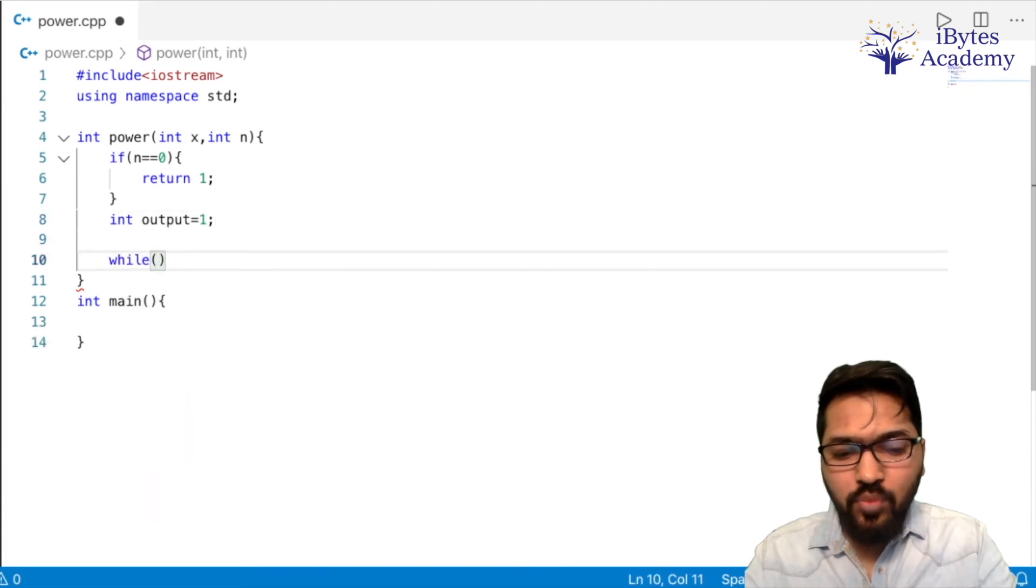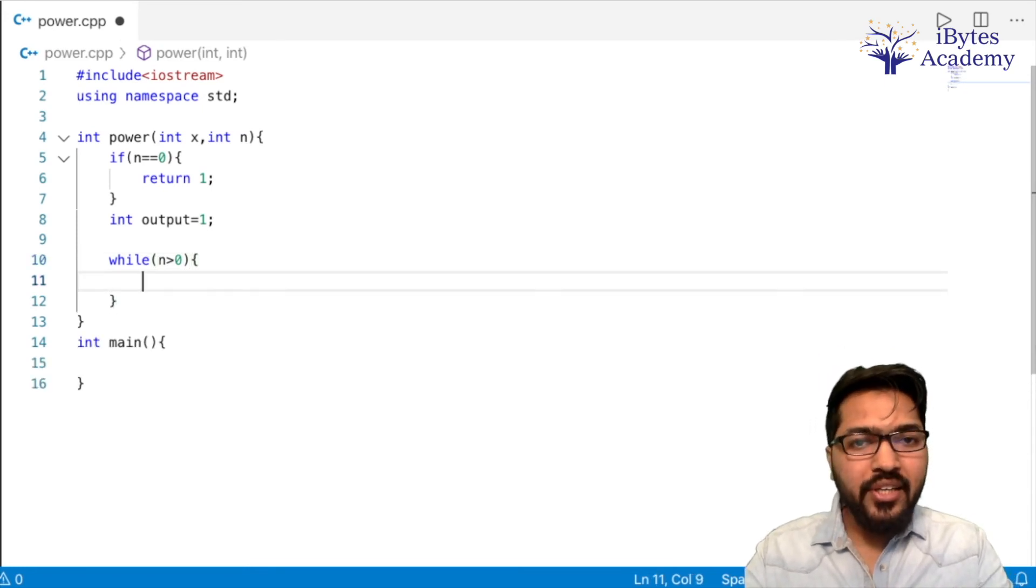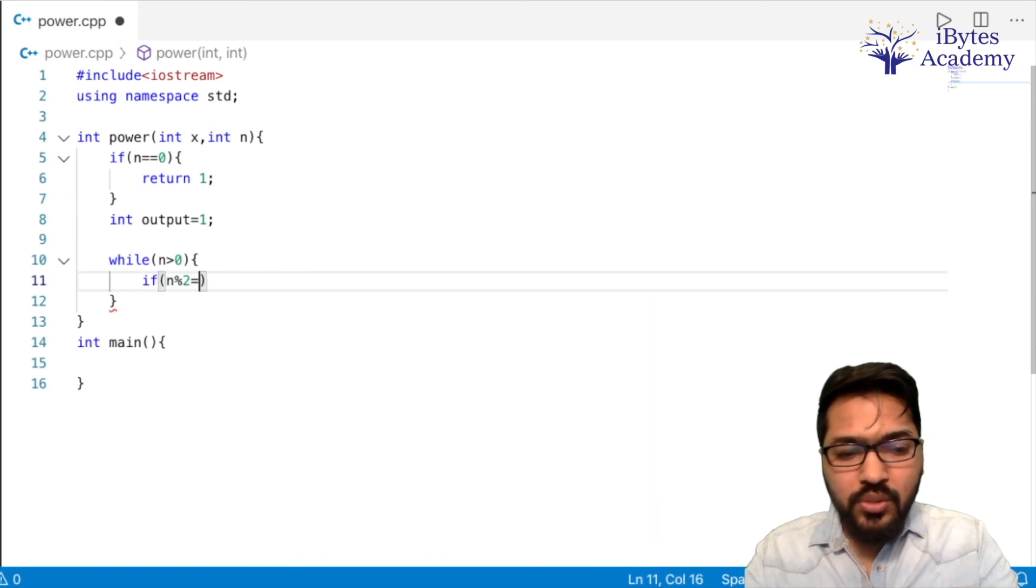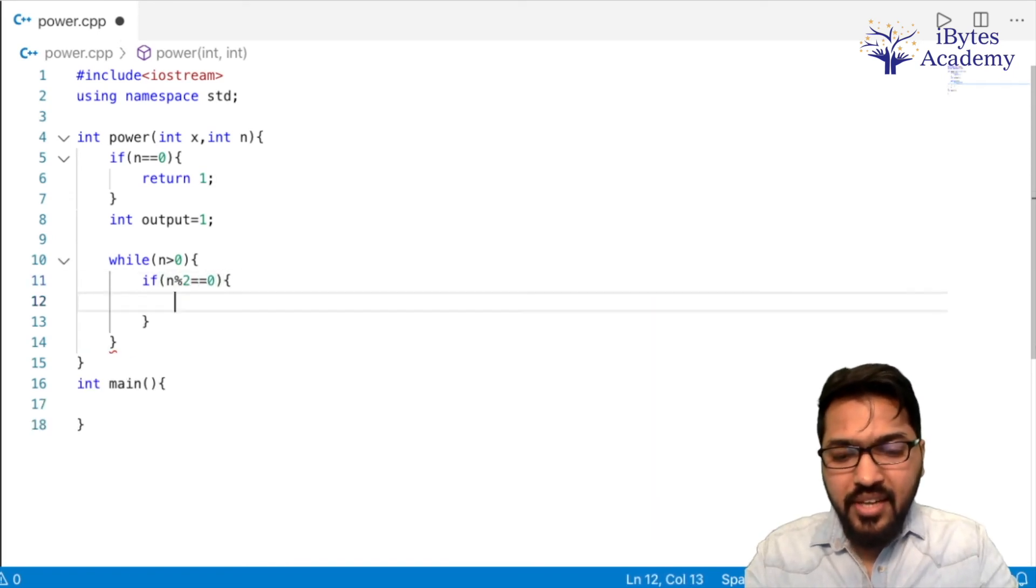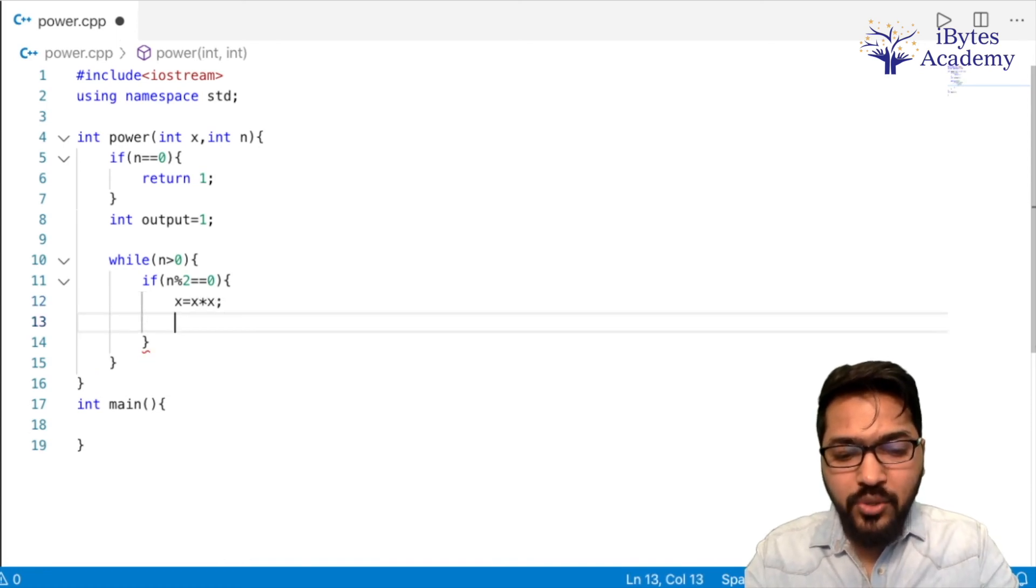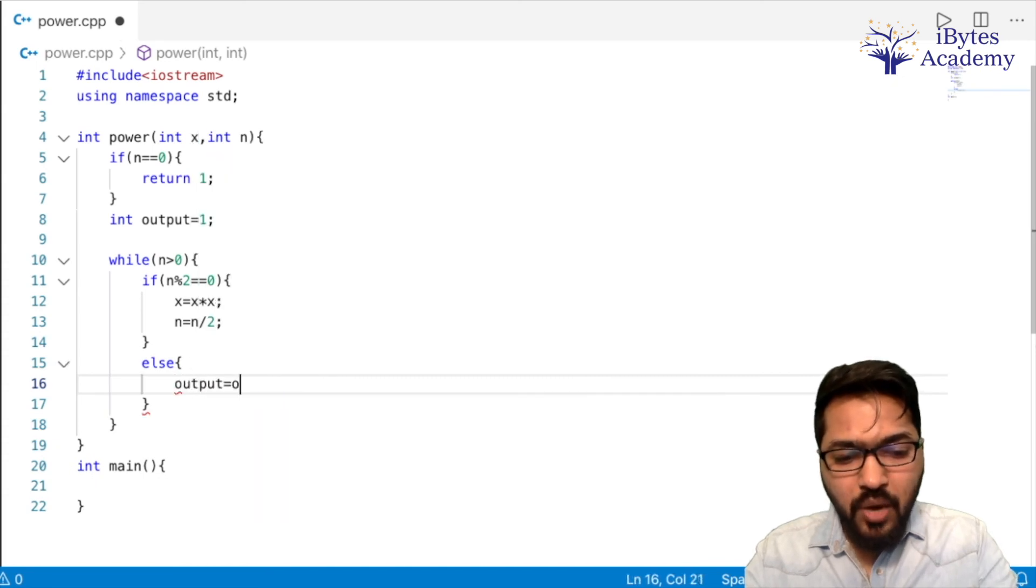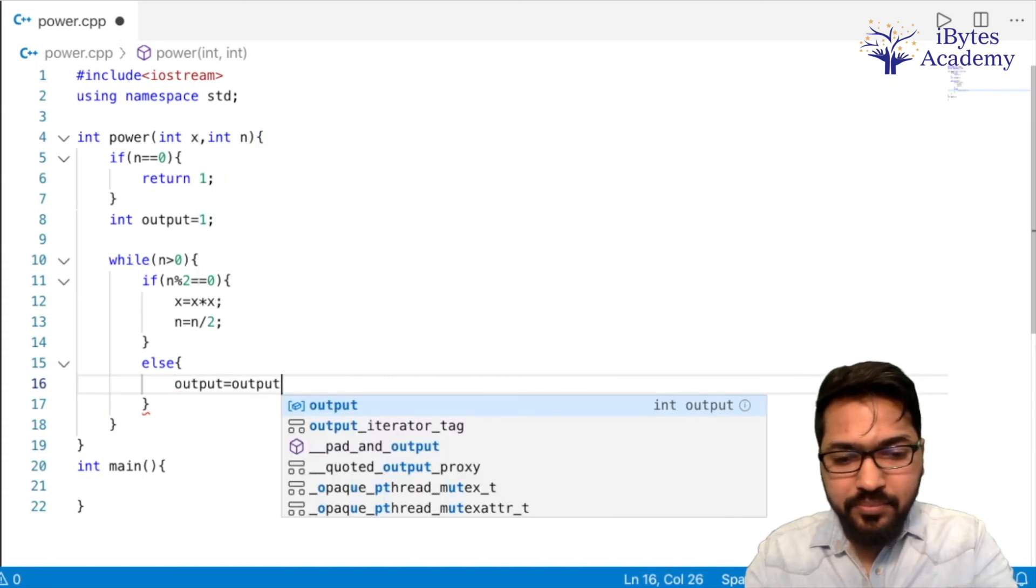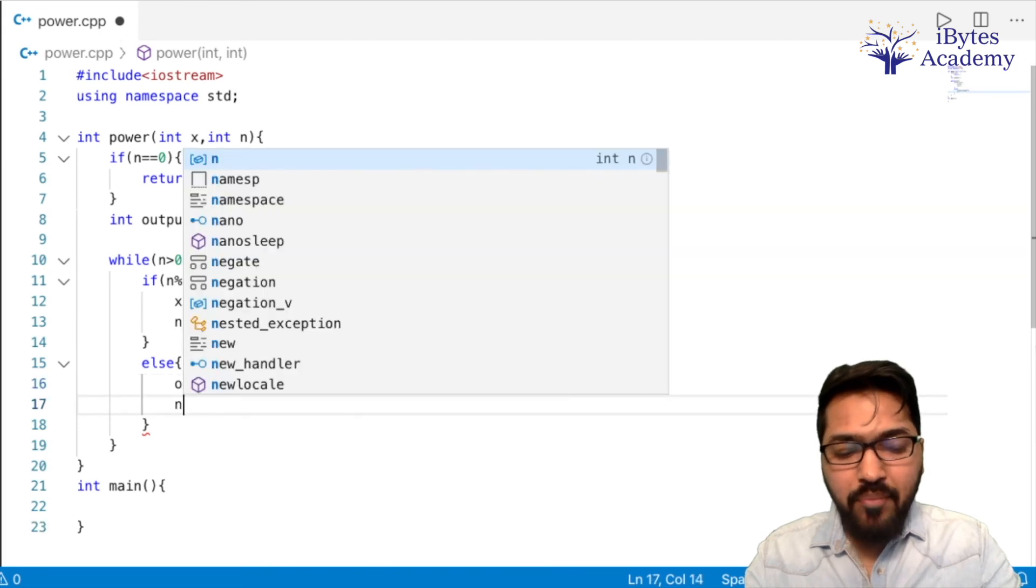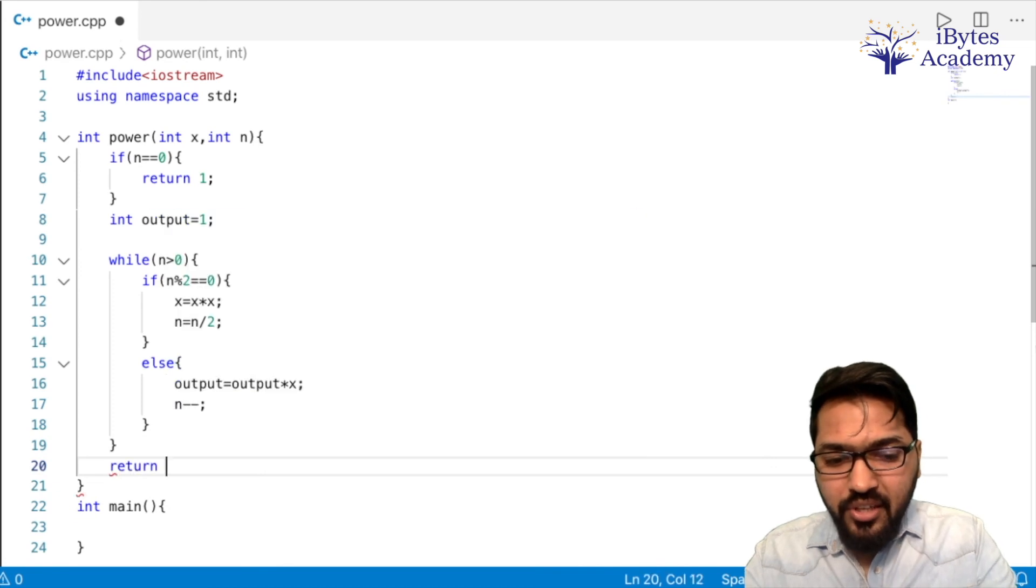Now let's initialize our output variable. And here we will start our while loop. While n is greater than 0. And inside that we will first check if n is an even number or odd number. If n modulo 2 is equal to 0. In that case x is going to be x into x. And n is going to be n by 2. Right? But if it is odd. Then output is equal to output into x. And n will decrease by one power, n minus minus. So at the end we will return our output.